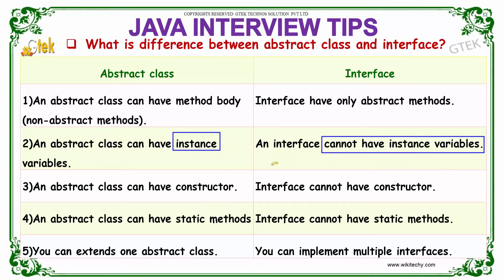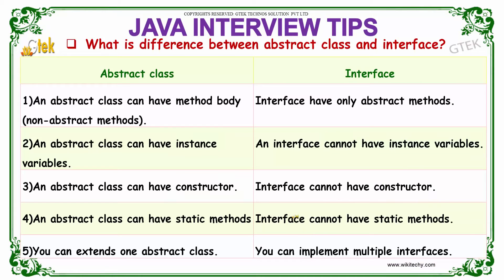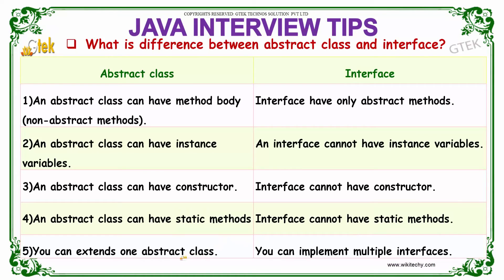An abstract class can have a constructor, whereas your interface cannot have a constructor. An abstract class can have static methods, whereas your interface cannot have static methods.